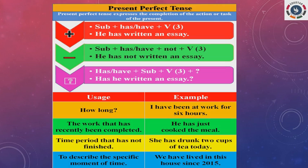To describe a specific moment in time where the action began in the past and continues in the present, present perfect is also used. For example, 'We have lived in this house since 2015' — from 2015 onwards they are living in that house. So for these actions, present perfect is used.